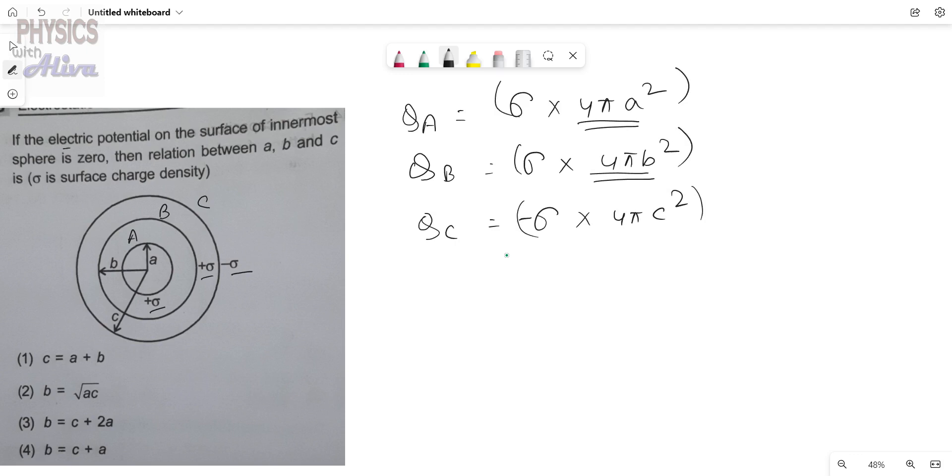Now it is said that electrostatic potential on the surface of the innermost sphere, that is potential at this point, is zero. Right, so V_A is zero.